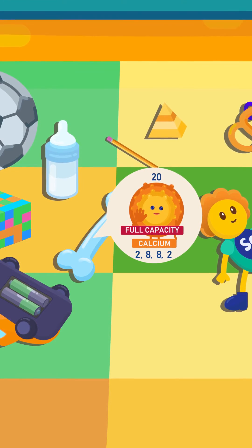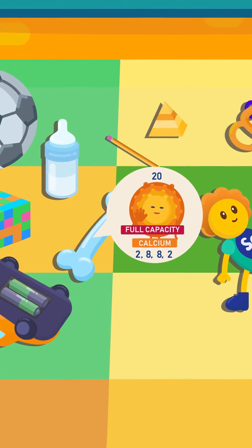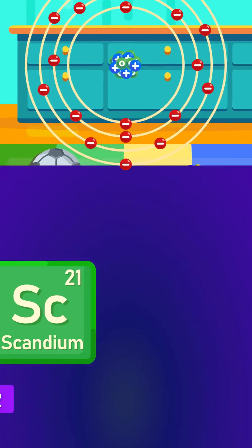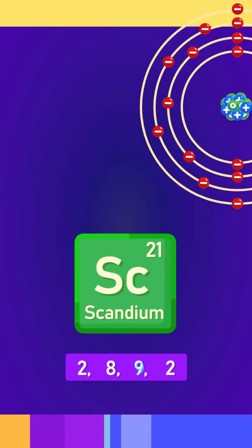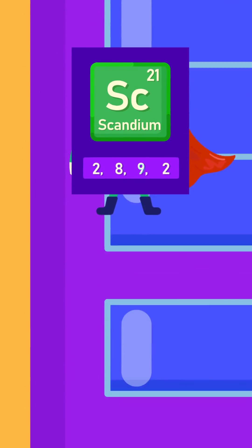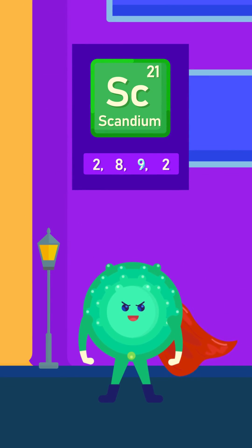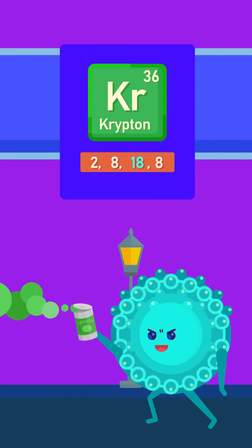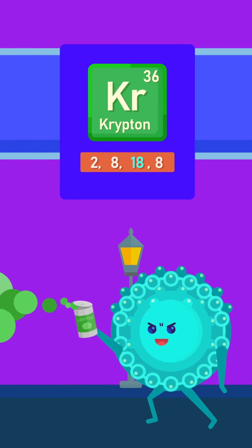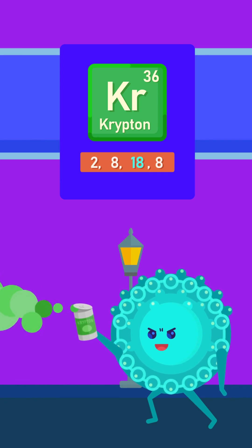Please remember that this only holds true until here. When the atomic number is more than 20, the third and the next shells will be filled differently. For example, the third shell can fit up to 18 electrons.